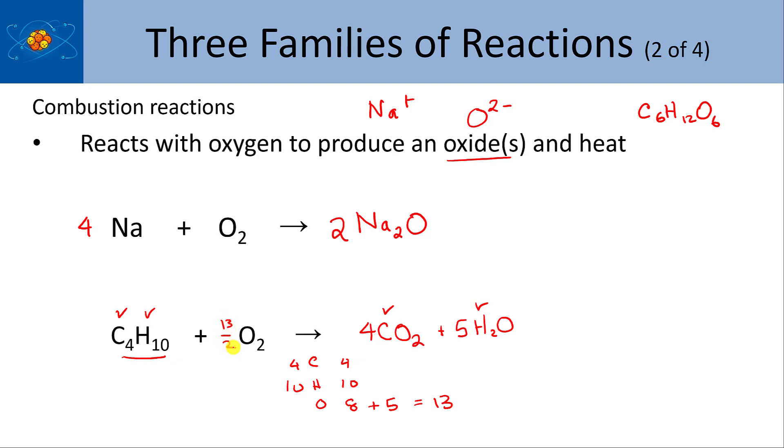And then we use the same general technique that we used in the earlier part of this chapter, when we discussed balancing reactions, we're going to go ahead and call this 13 over 2, 13 halves. And then we have to multiply everything by 2, so multiply by 2. And then you're going to have two C4H10s plus 13 O2s makes eight CO2s and 10 H2Os.